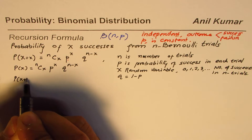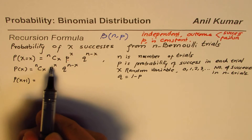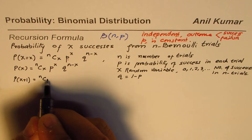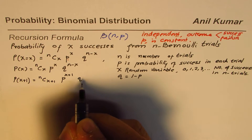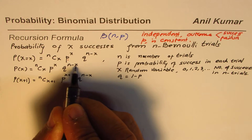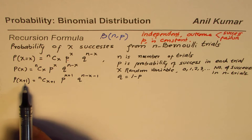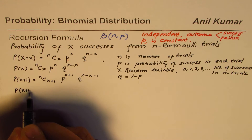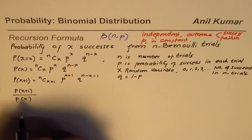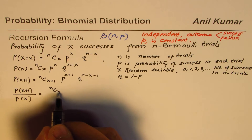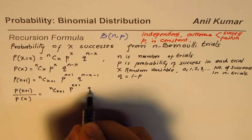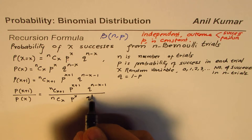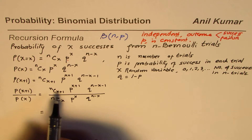For example, if x equals 5, we have the formula for 5 successes — what will be the probability for 6 successes? When x increases by 1, we replace x with x plus 1 in the formula. So the formula for x plus 1 successes in a binomial distribution is nC(x+1) times p^(x+1) times q^(n−x−1). Now we'll find the ratio of these two: P(x+1) divided by P(x). That ratio equals nC(x+1) p^(x+1) q^(n−x−1) divided by nCx p^x q^(n−x).